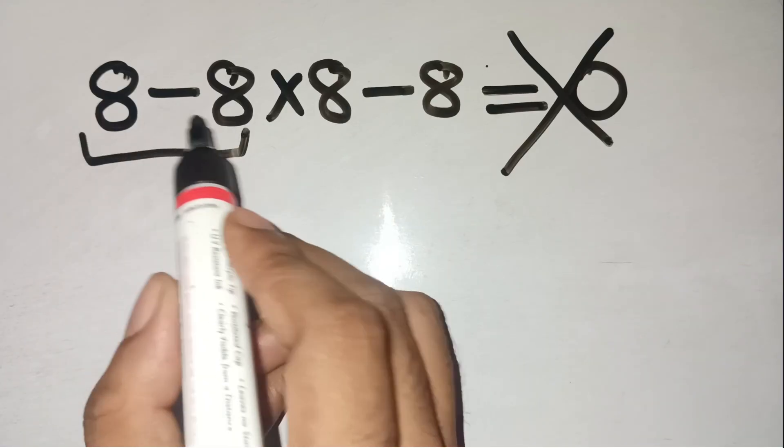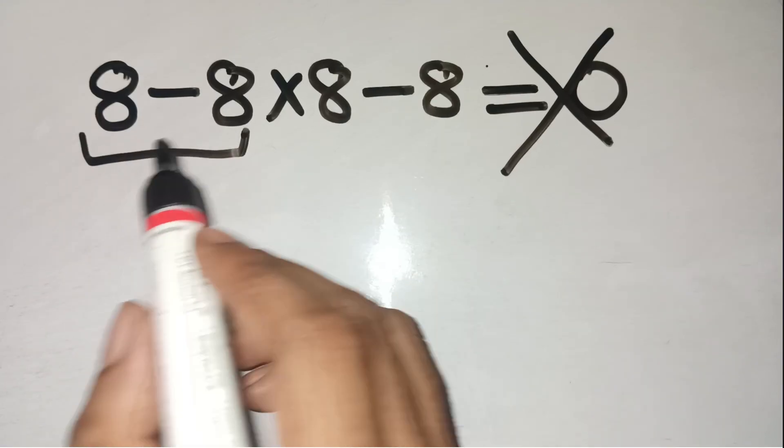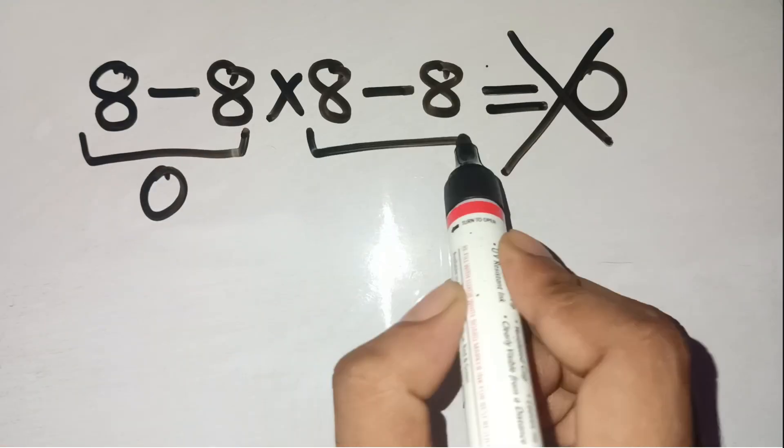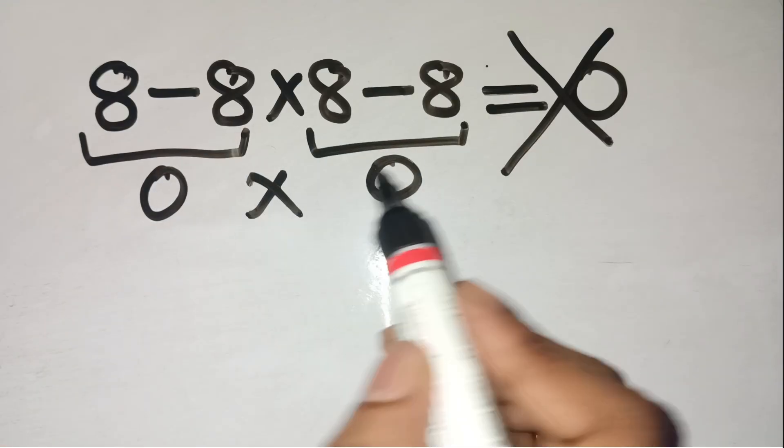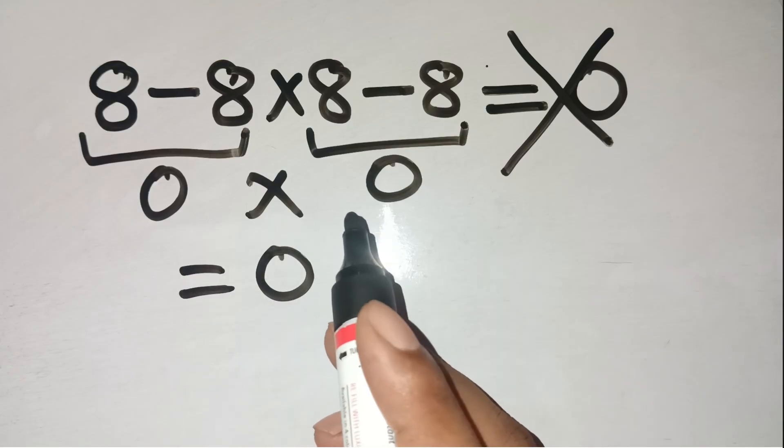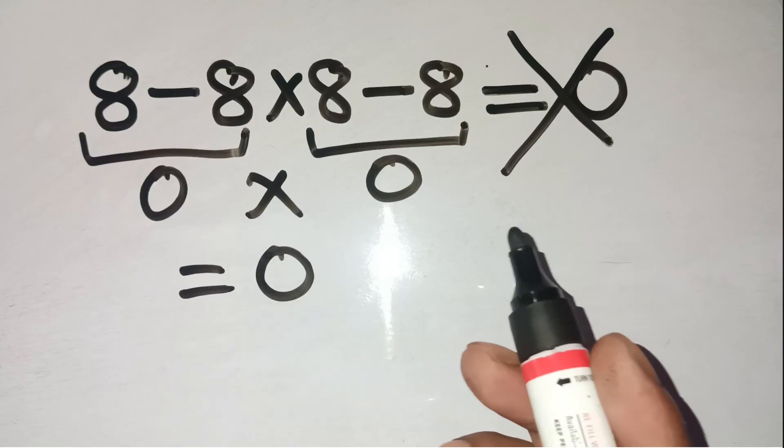You see 8 minus 8 times 8 minus 8, and you think, okay, 8 minus 8 is zero, and again, 8 minus 8 is zero, so zero times zero equals zero. That sounds perfectly reasonable, but that's not what's really happening here.